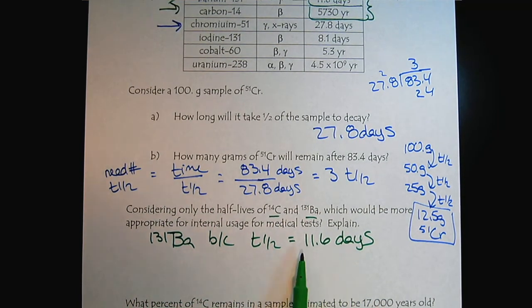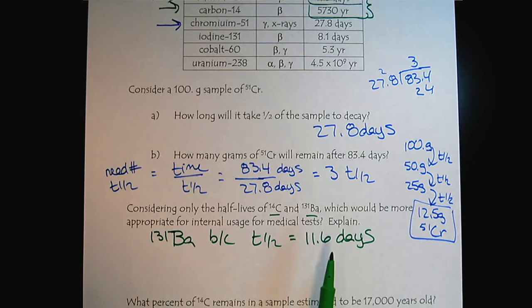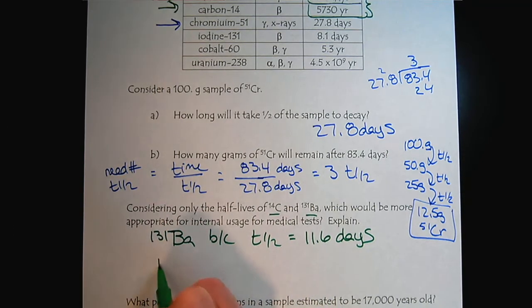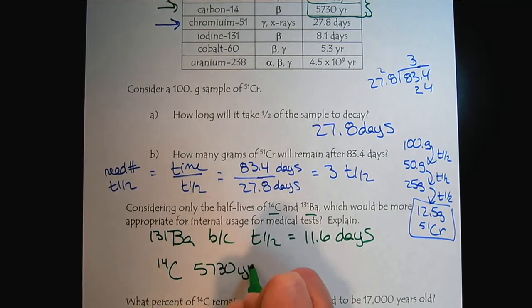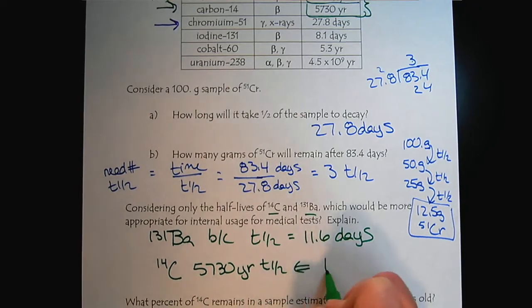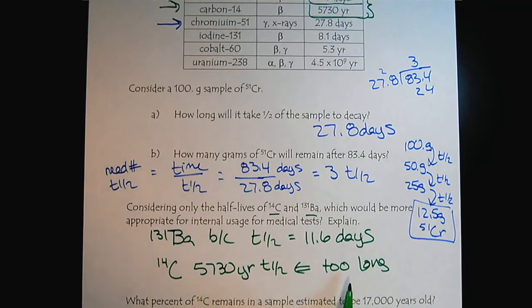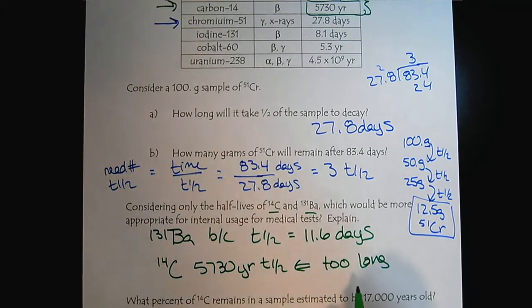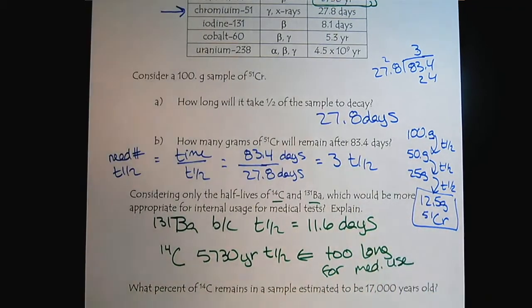So if the patient was to receive a medical, a nuclear medicine treatment, within about four or five half-lives, within 60 days, all of the barium 131 will have decayed and the patient will no longer be exposed. Carbon 14 with its 5730 year half-life, this is too long. There'd be too much exposure to the patient for medical use.